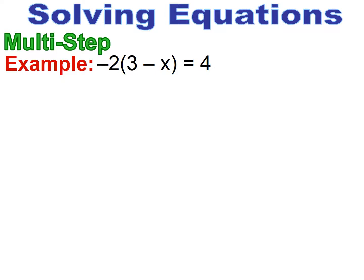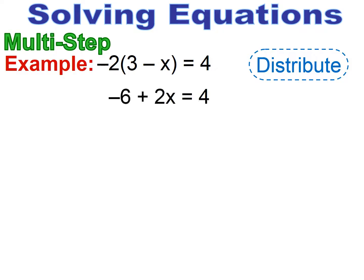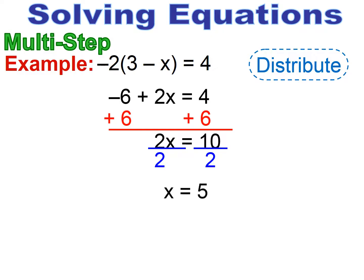Be careful when you have distributive property in an equation and you have a negative attached. Make sure that when you do the distributive property, you multiply correctly. A negative 2 times a positive 3 gives me minus 6, or negative 6. Negative 2 times a minus x will change that to plus 2x. So be careful with distributive property and negative signs. Now I have a two-step equation: I remove that negative 6 by adding it to both sides, then divide both sides by 2, and I get x equals 5.